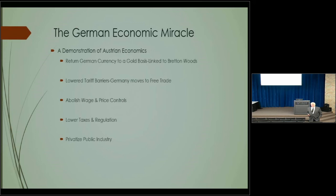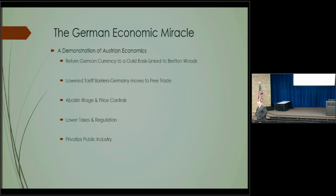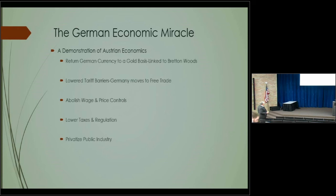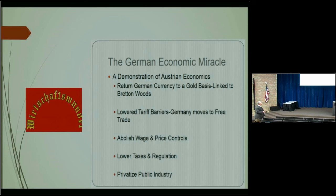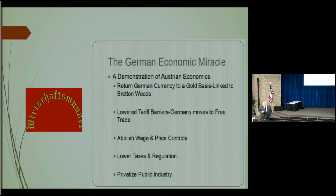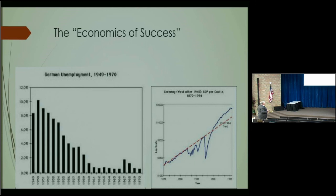Free trade, free markets, and solid currency — this is what's called the Wirtschaftswunder, a demonstration of Austrian economics. German unemployment was about 10 percent in 1945 and by 1970 it was almost zero. Today Germany has the lowest unemployment in Europe. The Deutsche Mark was very strong versus the dollar, while the United States currency was weakening because of quantitative easing.